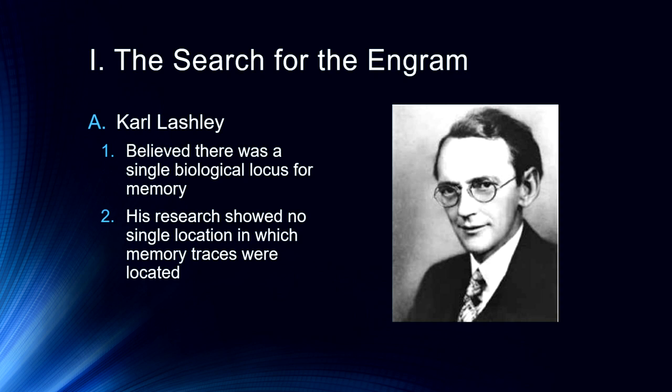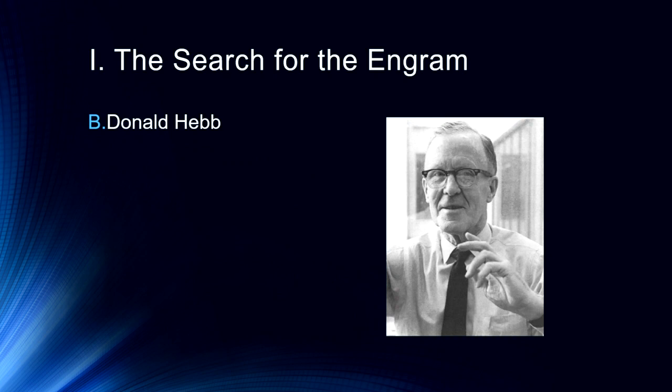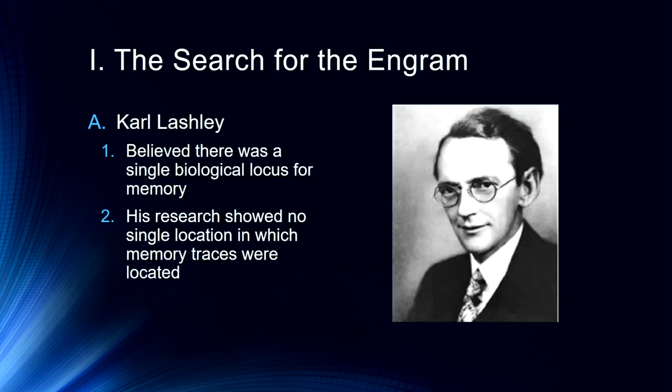The way rat research in this era essentially worked is they would teach the rat something — locations through a maze, how to find their way — and then they would take the rat out, do a little bit of neurosurgery and ablate part of the brain, damaging a small region. Then they'd put the rat back in and see if it still remembered. Essentially, they would give the rat a memory test after neurosurgery. But Lashley didn't have much luck — he couldn't really locate any single location where memories were stored. One thing we learned from his research is that memory storage is completely separate from memory encoding.